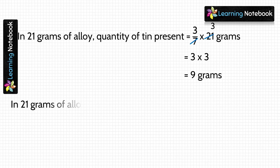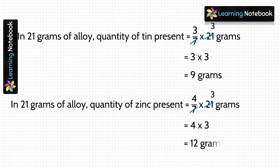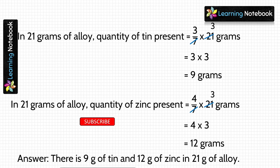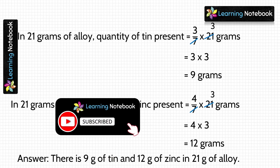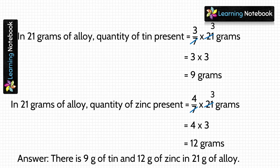Similarly, to find quantity of zinc in 21 grams of alloy, we do 4 by 7 into 21, which on simplification gives 4 into 3, equals 12 grams. So the answer is: there is 9 grams of tin and 12 grams of zinc present in 21 grams of alloy.